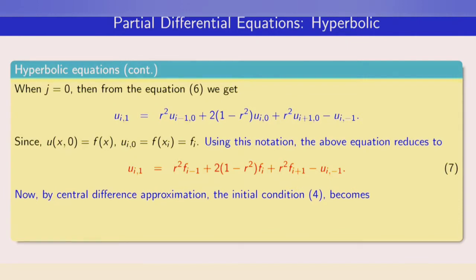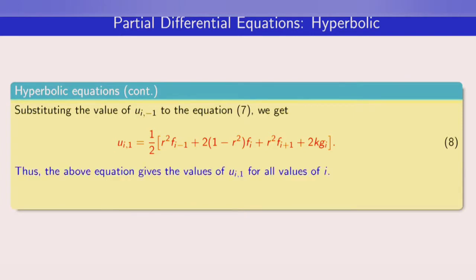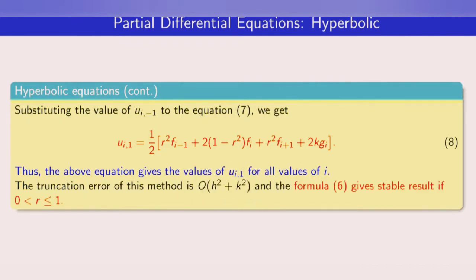To find u(i, −1), we approximate the initial condition for the first derivative using central differences: [u(i, 1) − u(i, −1)] / (2k) = gᵢ, where gᵢ is the given function. From this, u(i, −1) can be found. Substituting back, equation 7 reduces to equation 8, which gives u(i, 1) for all values of i — the right-hand side involves only the known functions f and g. The truncation error of this method is O(h² + k²), and formula 6 is convergent for 0 < r ≤ 1.